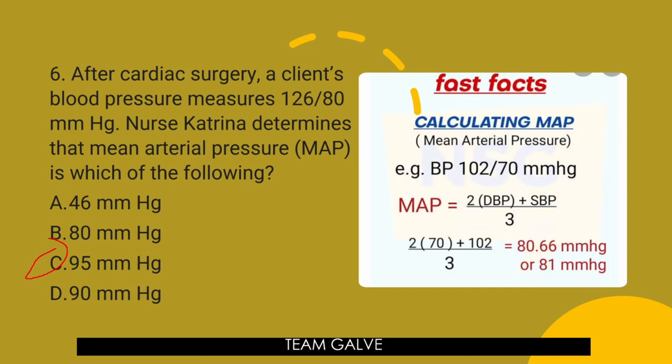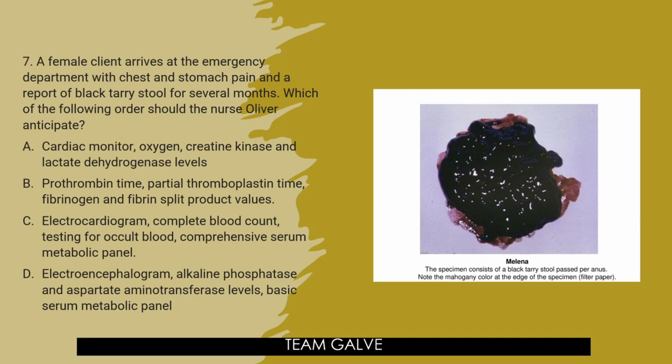Question number seven. A female client arrives at the emergency department with chest pain, stomach pain, and a report of black tarry stool for several months — that's melena. Which of the following orders should nurse Oliver anticipate? Is it A, cardiac monitor, oxygen, creatinine kinase, and lactate dehydrogenase levels?